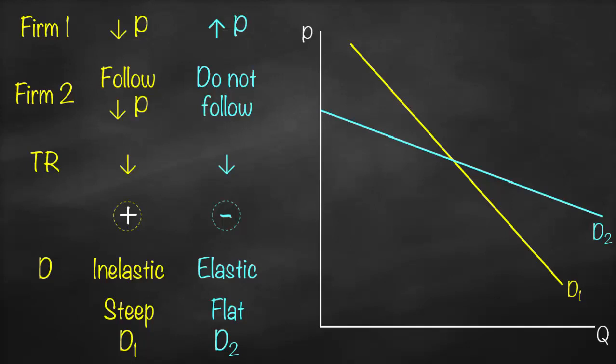Based on this analysis, you will discover that in an oligopoly it is better to compete using any factor other than price. Because if you start to play with the price by decreasing it, it would result in a price war between the two firms and both firms will be worse off. Therefore it's better to compete using any other strategy away from price.